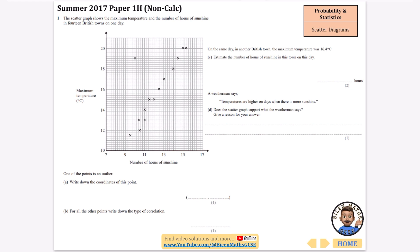This is from a non-calculator paper. The scatter graph shows the maximum temperature and the number of hours of sunshine in 14 British towns on one day. That means there are 14 crosses here.